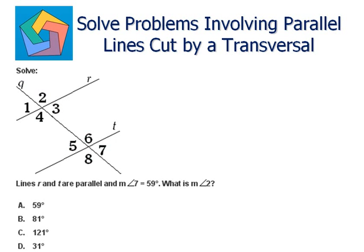Solve. Lines r and t are parallel and the measure of angle 7 is 59 degrees. This means this angle is 59 degrees. What is the measure of angle 2? This is angle 2 here.